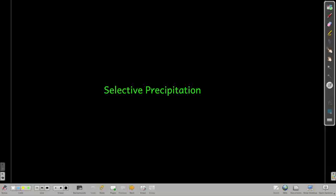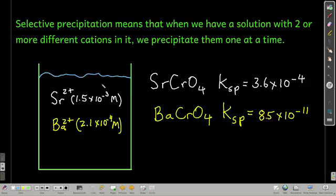In this module, we're going to talk about selective precipitation. What selective precipitation means is that when you have a solution where you have two or more cations, you can add an anion that will precipitate one of those cations, leaving the other behind in solution.